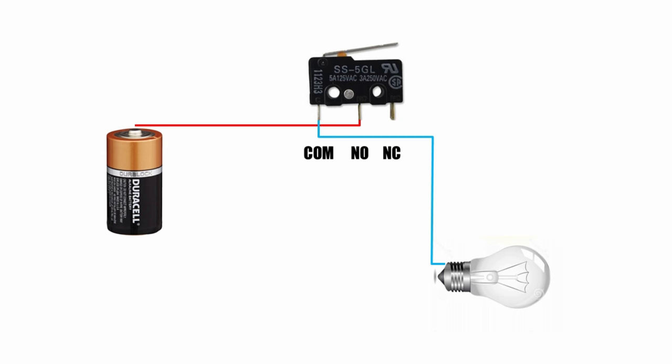To turn something off when the switch is pressed, the power source wire should go to the normally closed, and the common should again go to the component, and so on.